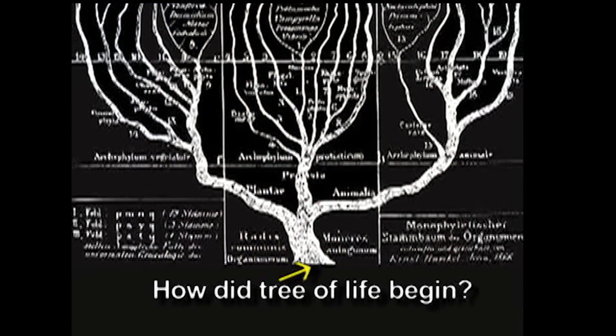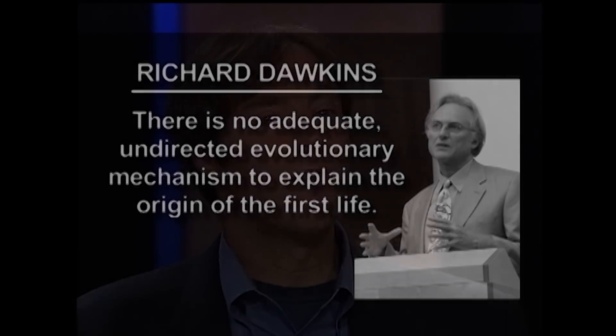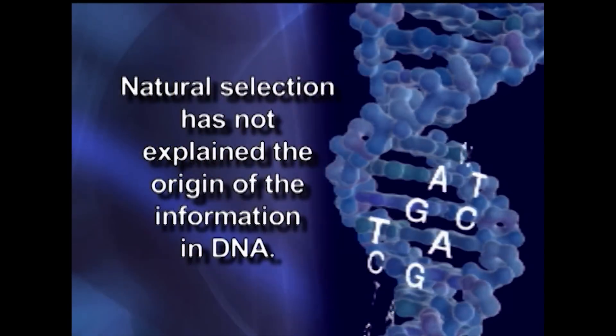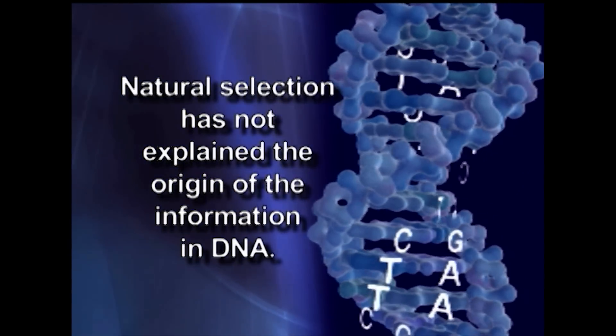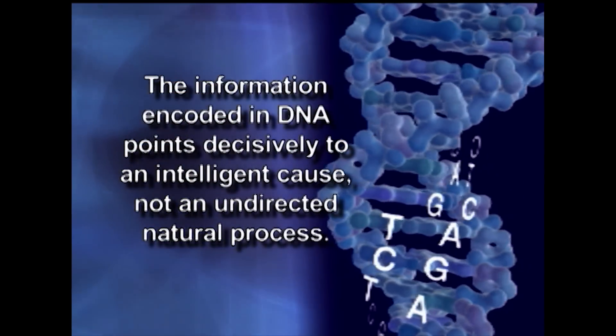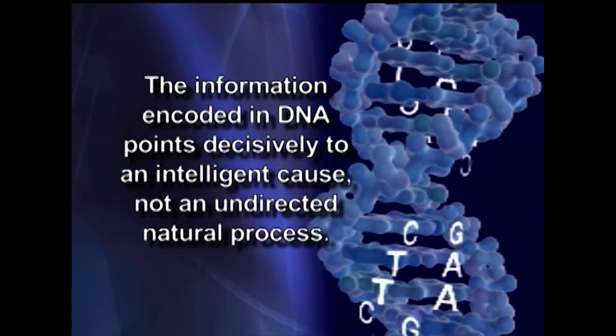Darwin never attempted to explain it, and Dawkins has acknowledged publicly that there is no adequate undirected evolutionary mechanism to explain the origin of the first life. So every living thing in the world has not been explained by undirected mechanisms or natural selection, and in particular, what we now know is that it hasn't explained the origin of information — and that's the key problem at the root of the origin of life, and that's the real problem that Dawkins hasn't addressed. The argument I'm making is that the information encoded in the DNA molecule points decisively to an intelligent cause, not an undirected natural process.